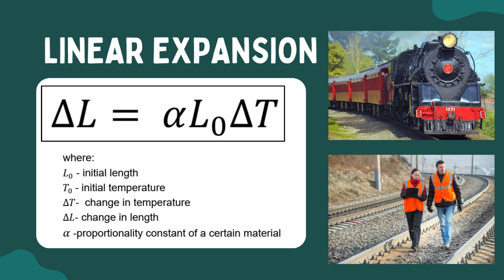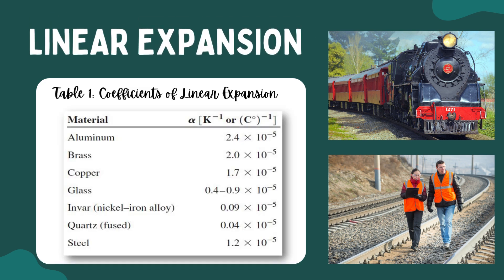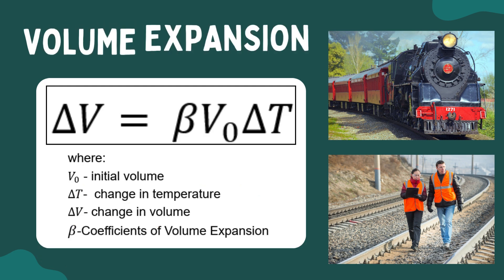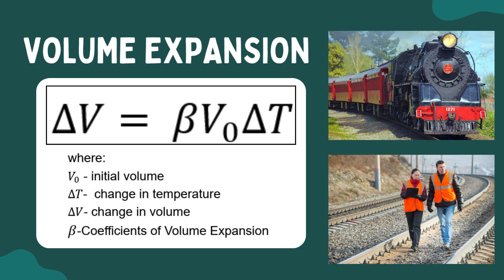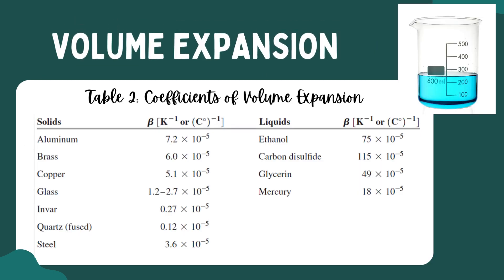Linear expansion can be calculated using this formula. This table shows the coefficient of linear expansion of different materials. Increasing temperature usually causes increases in volume for both solid and liquid materials. The increase in volume, which is delta V, is approximately proportional to both the temperature change, delta T, and the initial volume, represented by V sub 0. This table shows the coefficients of volume expansion for different materials.